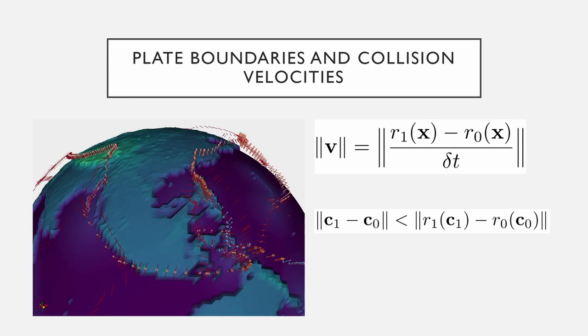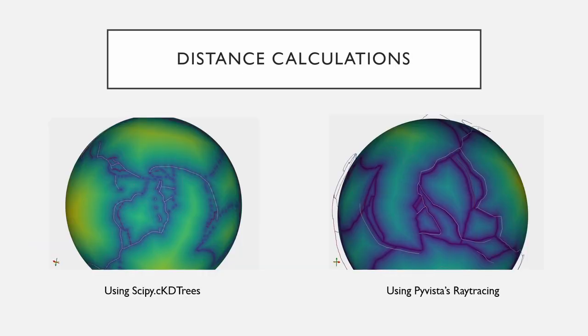We will also be needing to perform many distance calculations, and we have two differing methods to do so. The first method is based on the KD tree algorithm, which helps us identify which k number of points on our plates are the closest to a given vertex. This is, however, not ideal for the actual distance calculations because it treats the boundary as a set of points rather than a continuous line, resulting in a distance field looking like a stitching pattern.